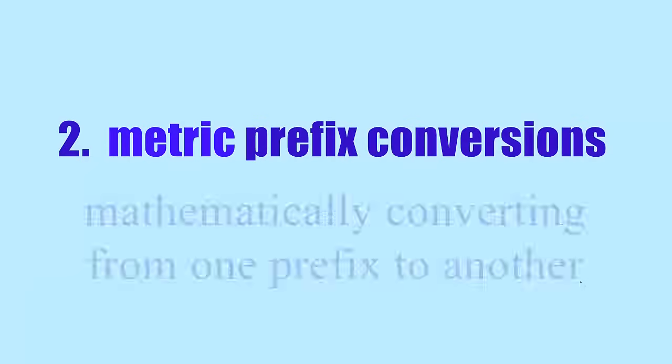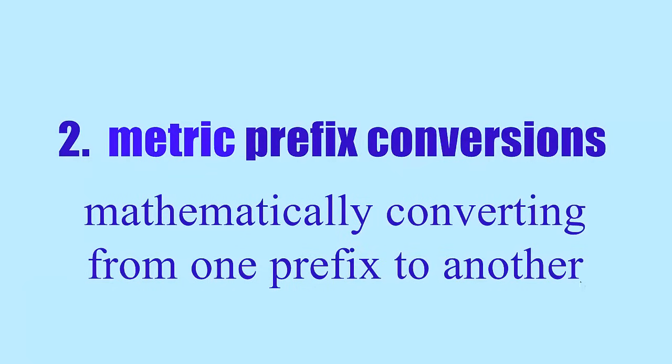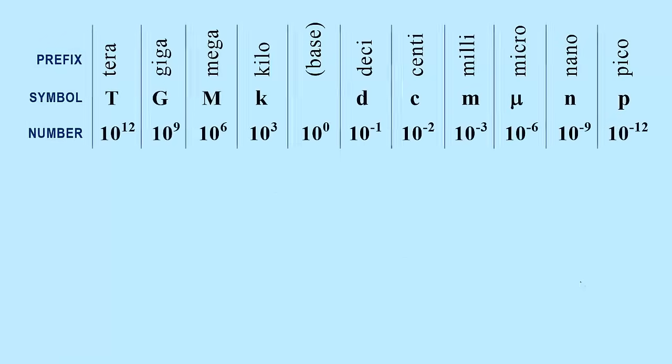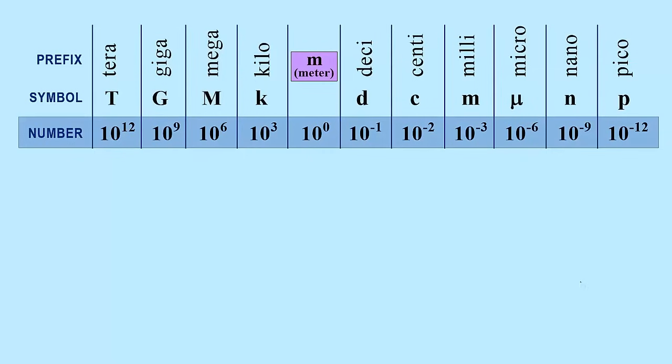So now let's take a look at how we can convert from one metric prefix to another. To gain an easier perspective, let's put everything in a horizontal table. And we will begin with meters and grams for our base units. This table allows for an easy view of each exponent, which we will need in the conversions.